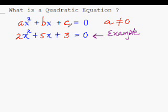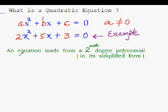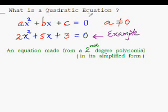Why must a not equal 0? Because if a is 0, then this entire term will become 0, and the equation will be reduced to a linear equation. In proper mathematical language, a quadratic equation is defined as an equation made from a second-degree polynomial in its simplified form. For any equation to be called a quadratic equation, it must fulfill two conditions: first, it should be of second degree, meaning the highest power of x should be 2.